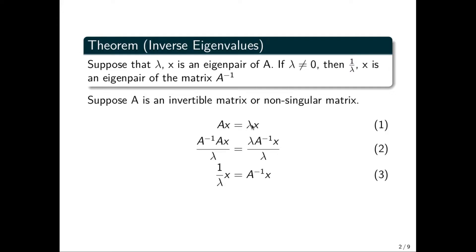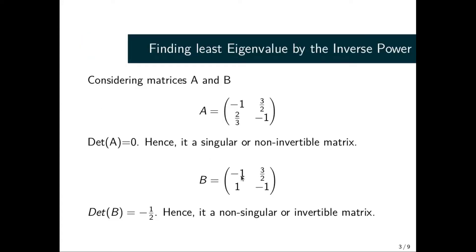Here our λ is cancelled, so we are left with equation (3), which is (1/λ) times x equals A inverse x. Since our λ is a scalar, to find the least eigenvalue of a matrix, we'll be dealing with the inverse of a matrix, so we have to check if our matrix is invertible or has an inverse.